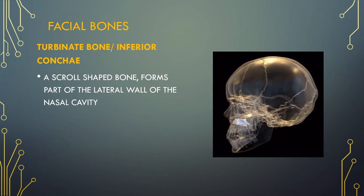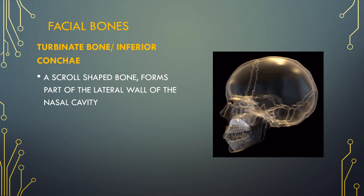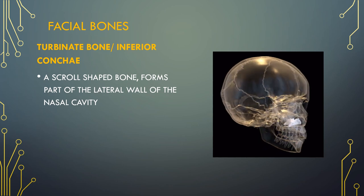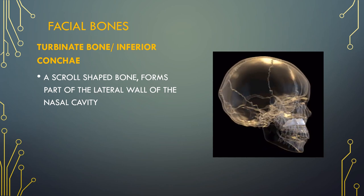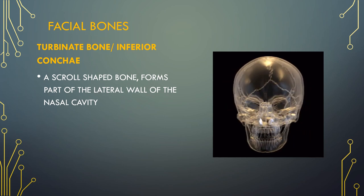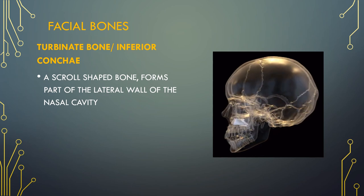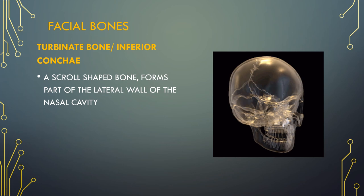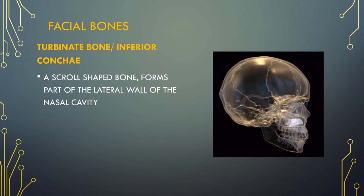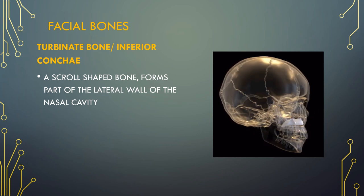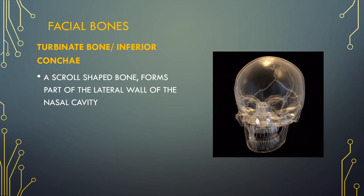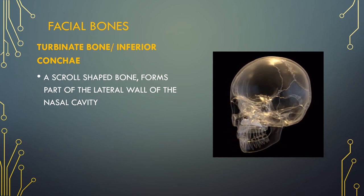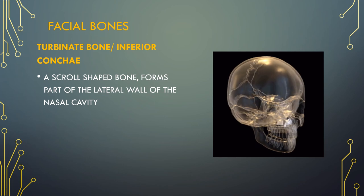The turbinate bone is a scroll-shaped bone that forms part of the lateral wall of the nasal cavity. They have three main functions: they warm the air we breathe, humidify this air as it passes through the nose, and the mucous layer of the turbinates assists in filtering particles such as dust and pollen. The turbinates, particularly the inferior, can block breathing when they are enlarged.